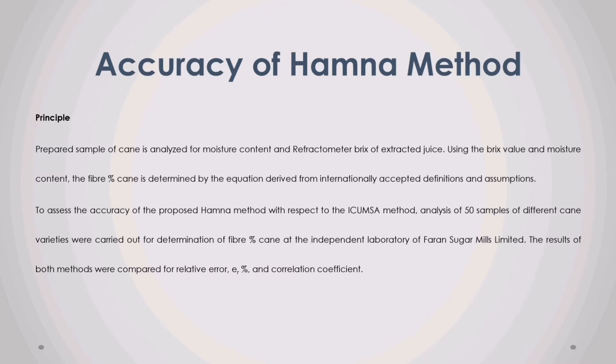Accuracy of Hamner method. A prepared sample of cane is analyzed for moisture content and refractometer brix of extracted juice. Using the brix value and moisture content, the fiber percent cane is determined by an equation derived from internationally accepted definitions and assumptions. To assess the accuracy of the proposed Hamner method with respect to the ICUMSA method, analysis of 50 samples of different cane varieties were carried out for determination of fiber percent cane at the independent laboratory of Faran Sugar Mills Limited. The results of both methods were compared for relative error and correlation coefficient.